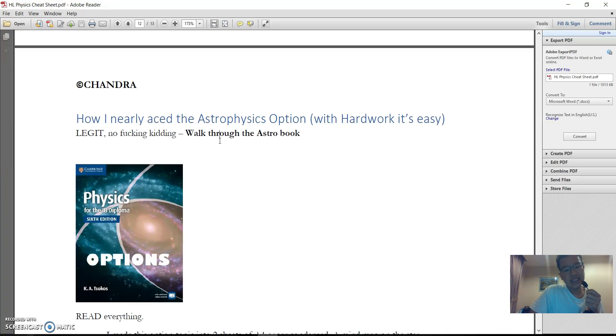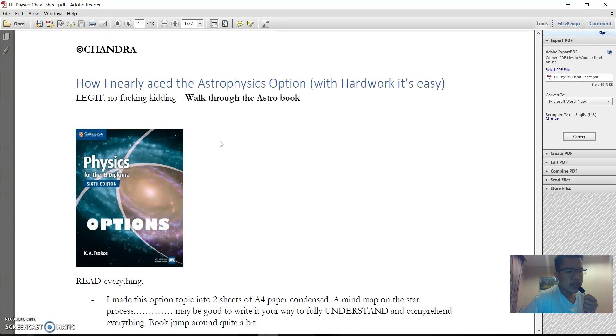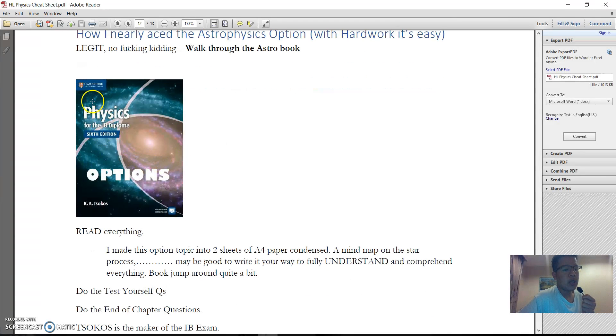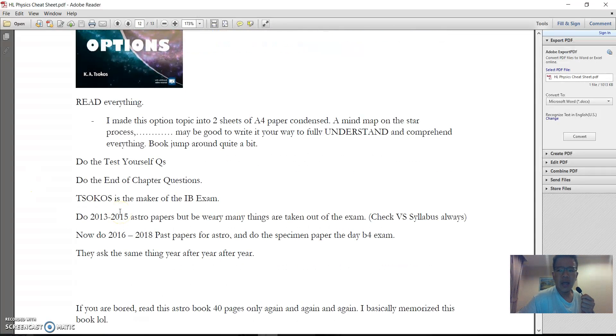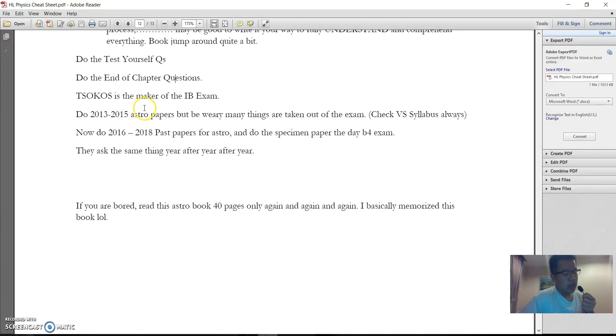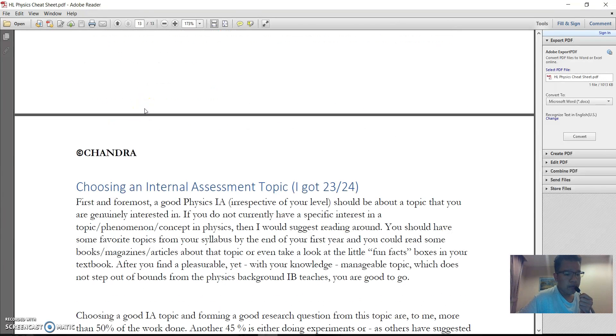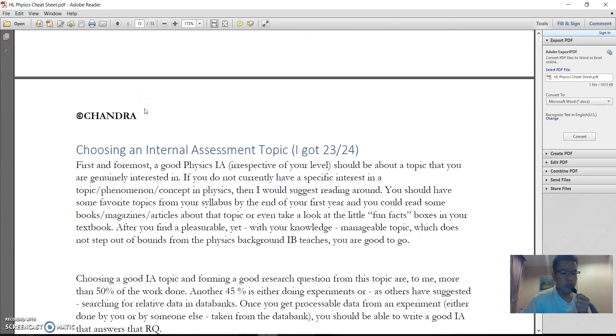And how I nearly ace the astrophysics option, which is actually doable, because astrophysics option, the test is so similar, the question types, to the actual option book by Tsokos. It's only 40 pages long, and I read it over and over again, did all the test yourself questions, did all the end of chapter questions, did all the astrophysics papers. It's really doable to ace that option.